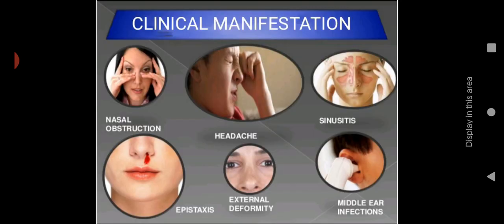Let us see the signs and symptoms. The main signs and symptoms are nasal obstruction, headache, sinusitis, epistaxis and nose bleeding, external deformity in the appearance of the nose, and middle ear infection. Once the sinus or nose is blocked, there is a chance of spreading infection or fluid collection in the ear. These are the possible clinical manifestations.